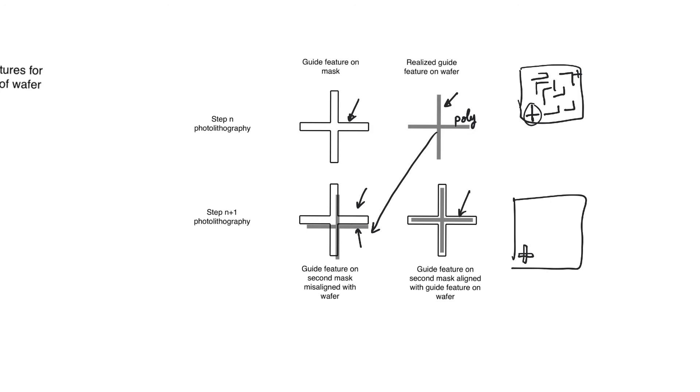Now why are we using a cross? Because there are three ways in which we can have misalignment. We can have misalignment in the x direction, we can have misalignment in the y direction, but we can also have rotation which can cause misalignment.